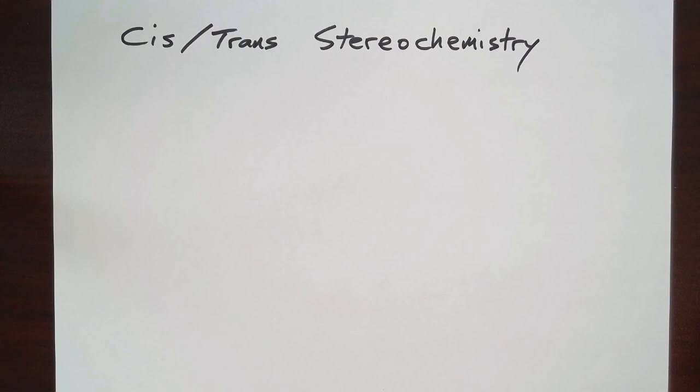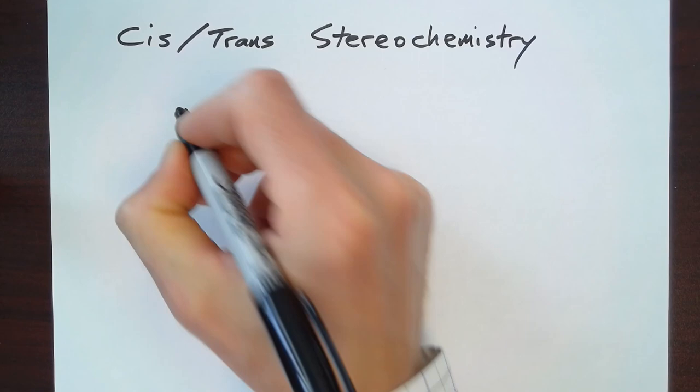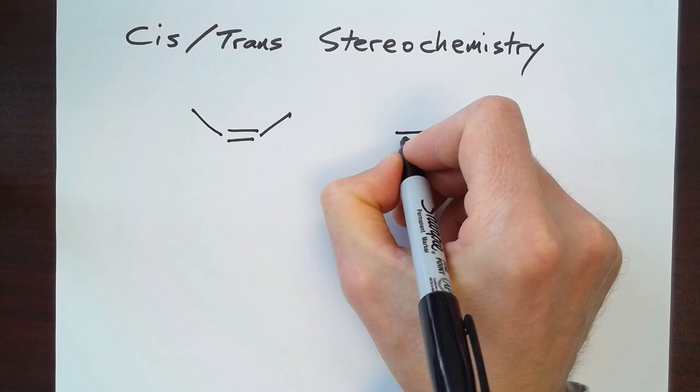As we have already discussed, double bonds do not rotate, so 2-butene can exist where the methyl groups are on the same side of the double bond or on different sides of the double bond.